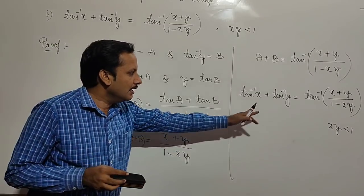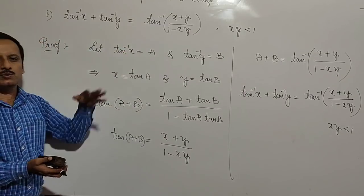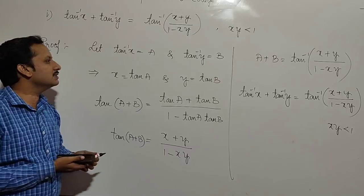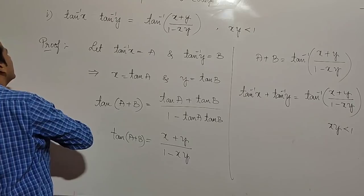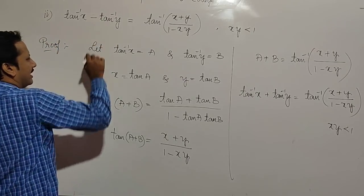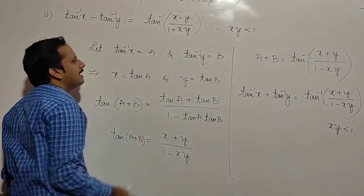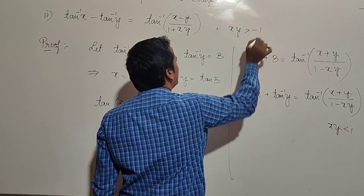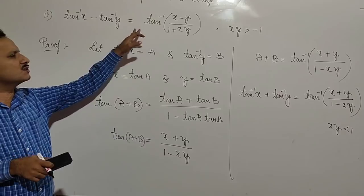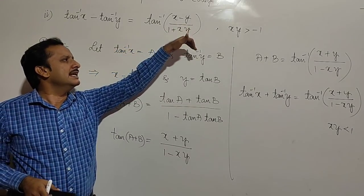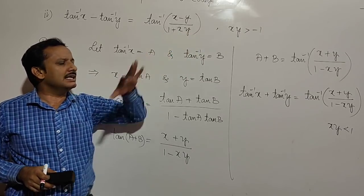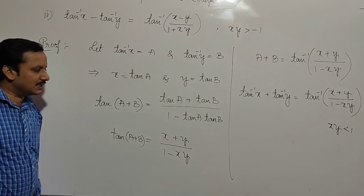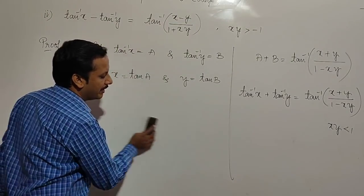Now let us see what happens with tan inverse x minus tan inverse y. Tan inverse x minus tan inverse y equals tan inverse of x minus y divided by 1 plus xy, whenever xy is greater than minus 1. I will prove this result; the proof is very similar to the previous proof.